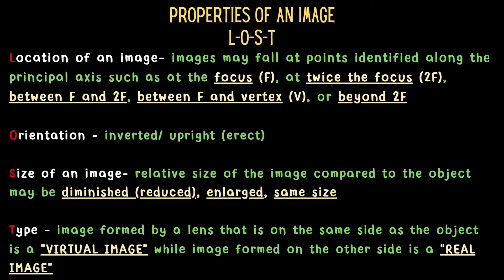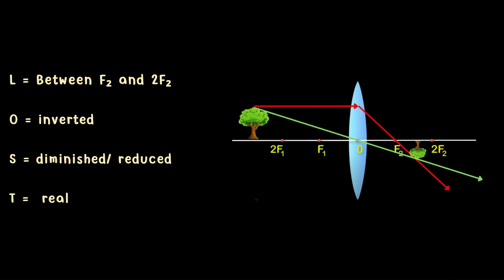Now, let us identify the properties of an image. As you can see, the image is located between F2 and 2F2. What is its orientation? Is the image inverted or upright? The answer is inverted. What about its size? Is it reduced, or smaller than the object? Enlarged, or larger than the object? Or same size? The answer is reduced or diminished. What about the type of image? Is it real or virtual? This is real because the image formed is inverted.